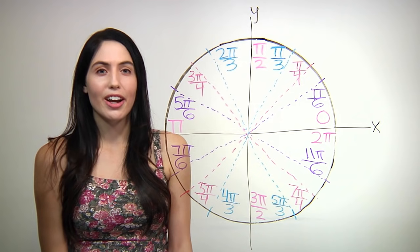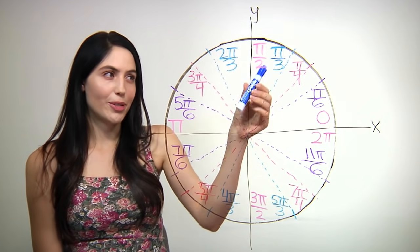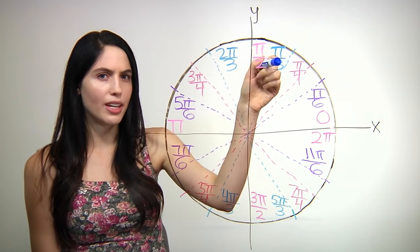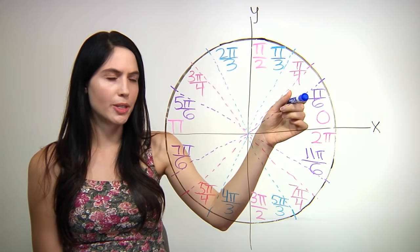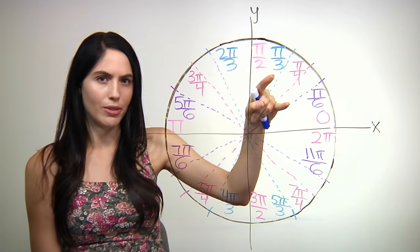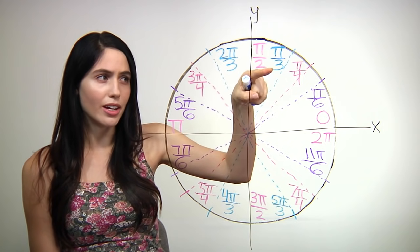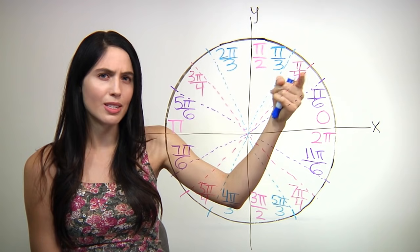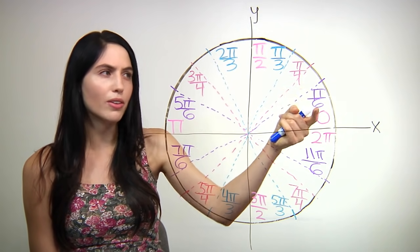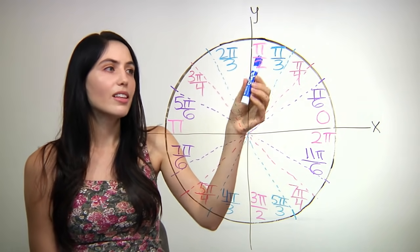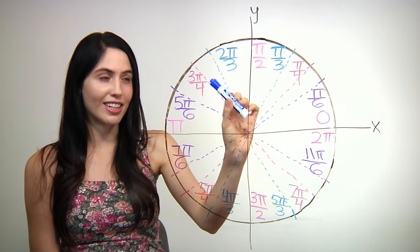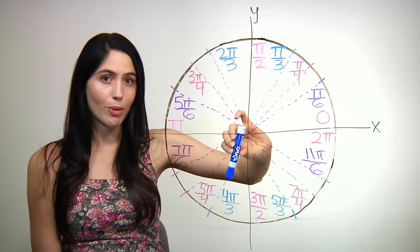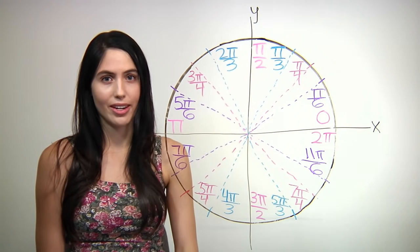Finally, we have the pi over threes. The first pi over three is here. It might seem wrong to you that pi over three is bigger than pi over six, but remember, you're dividing by those numbers — you're dividing by three here, but you're dividing by a bigger number, six, here. So this is actually a smaller, lower value than that. Anyway, this is pi over three. If you reflect it across the y-axis, you have two pi over three. Down here is four pi over three, and down here is five pi over three.